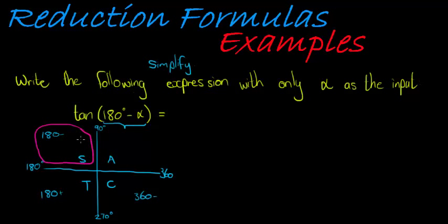In the second quadrant there is an S, that means that only sine is positive. Only sine of the angles would be positive. So that means that tan would give me a negative output.